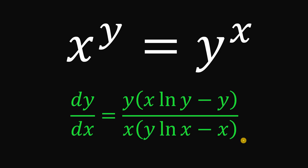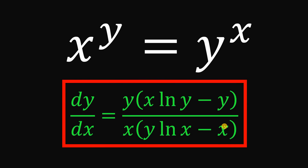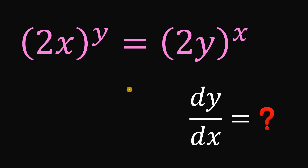And as always, we are done. Before we end this video, I want you to get some practice. Given this equation: the quantity 2x raised to the power of y equals the quantity 2y raised to the power of x, your goal is to find the derivative of x with respect to y. If you are done with your solution, just post your solution in the comment section down below. See you on the next video.